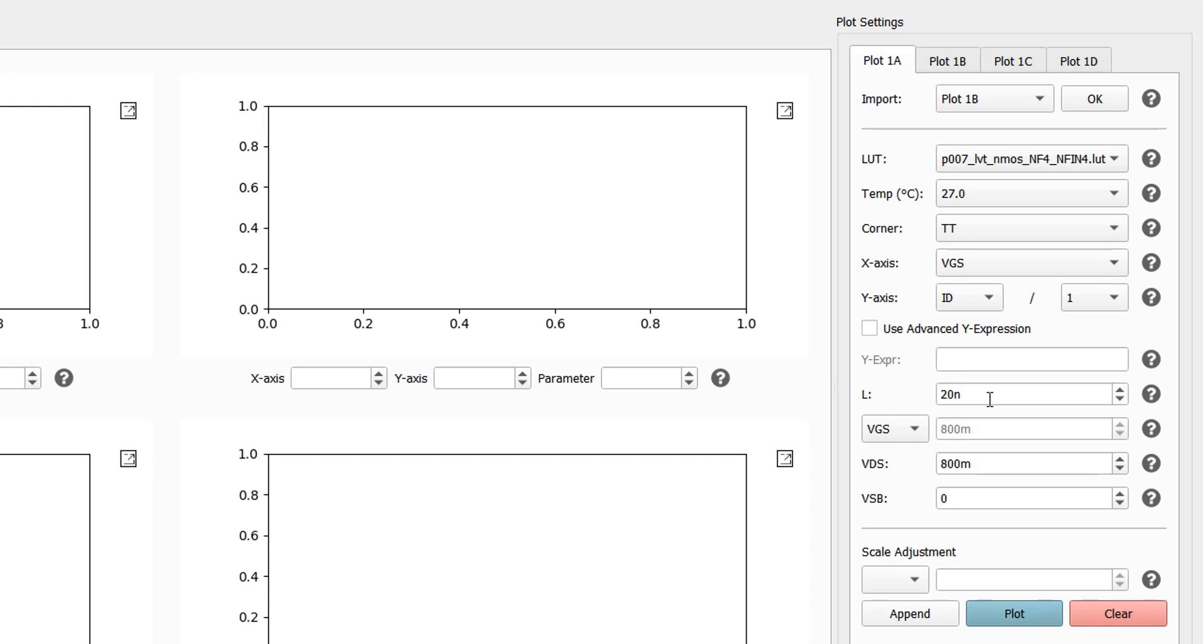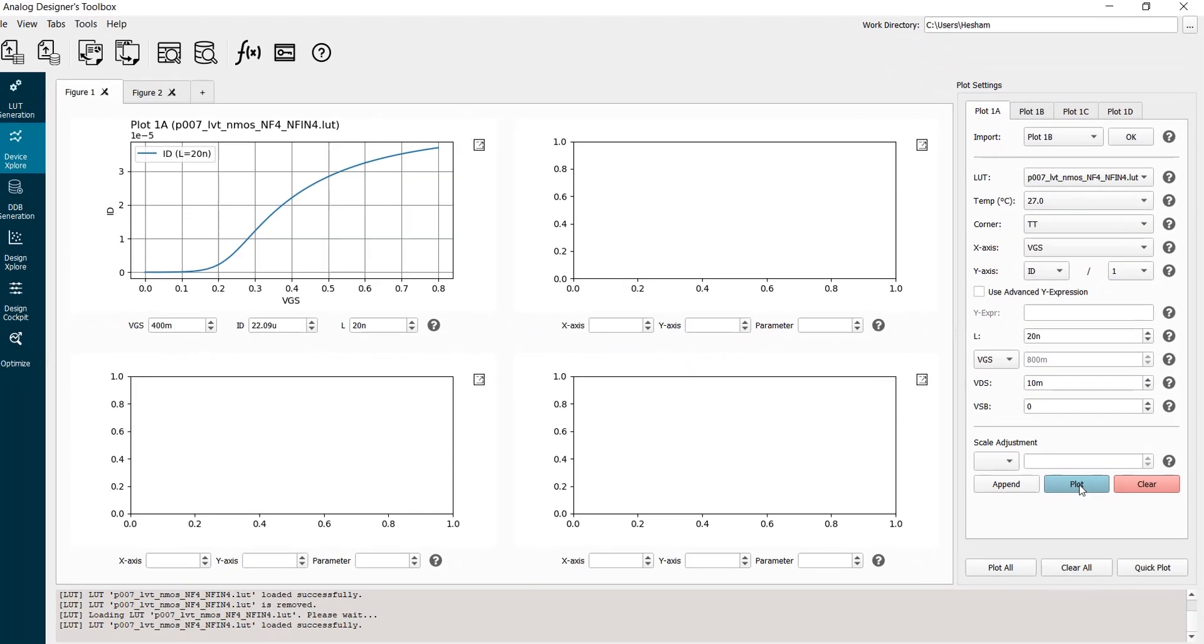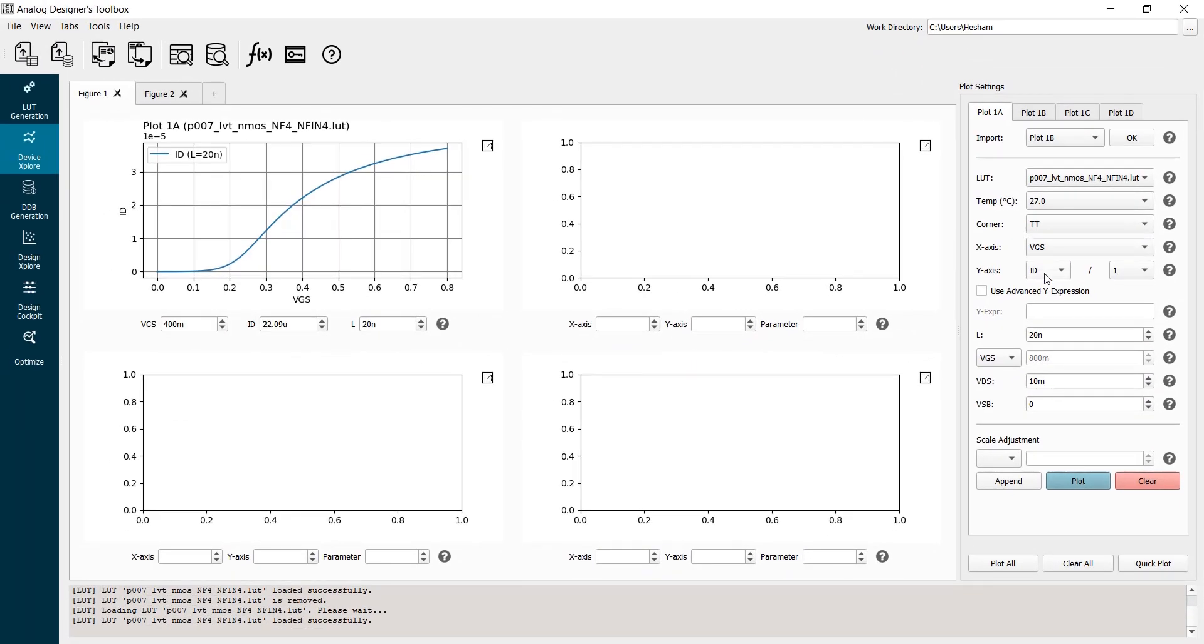Of course, this is 7 nanometer technology, but as you know, the 7 nanometer is just a marketing name, but the actual physical gate length is around 20 nanometer. I will set VDS to 10 millivolts. I will plot drain current. Then I will select GM. I will append GM to the plot.